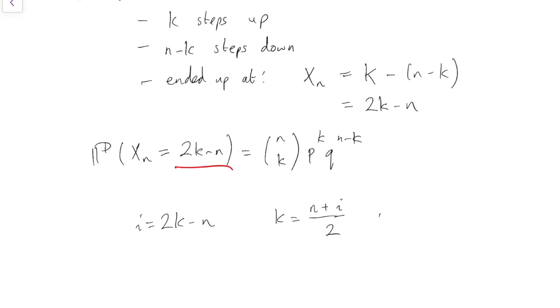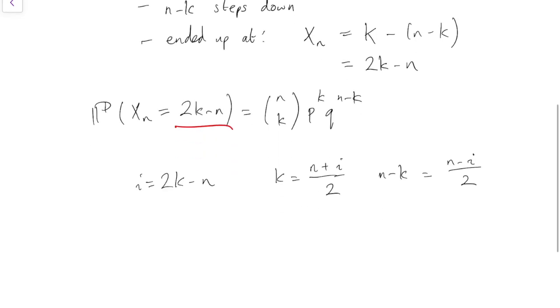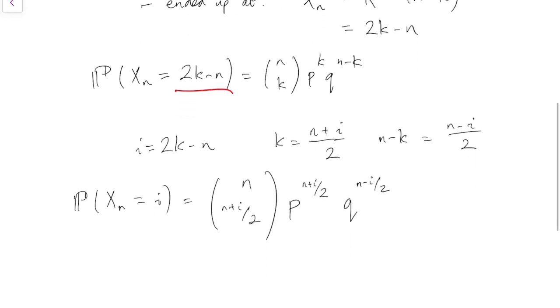So that means k equals n plus i divided by 2, and n minus k is equal to n minus i divided by 2. So if we substitute that back in, perhaps a nicer way to write it is the probability that Xn equals i equals n choose (n plus i over 2), p to the (n plus i over 2), q to the (n minus i over 2). And that's when i and n are the same parity. They're both odd or both even.